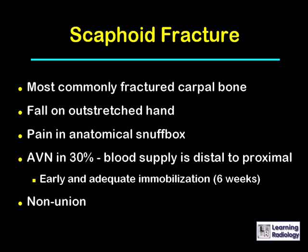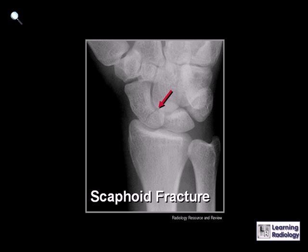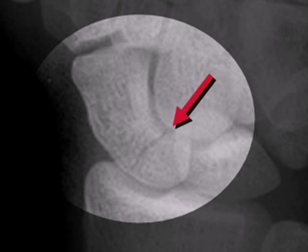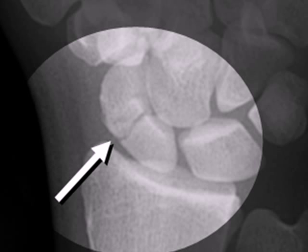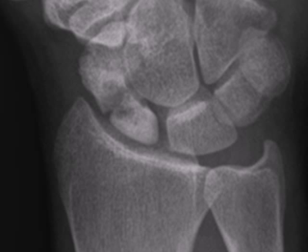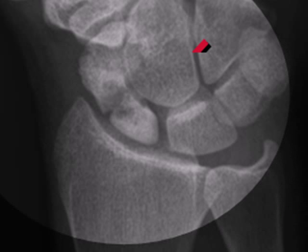Scaphoid fractures are also prone to non-union. The red arrow points to the transverse fracture line through the proximal pole of the scaphoid. In fractures through the waist of the scaphoid, interruption of the blood supply to the proximal pole can result in avascular necrosis, recognized by increased density and sclerosis of the proximal pole relative to the remainder of the carpal bones.